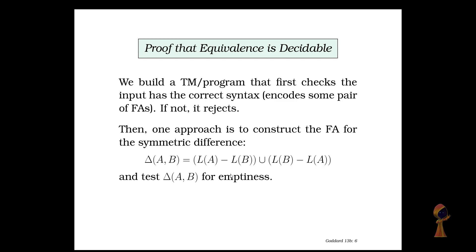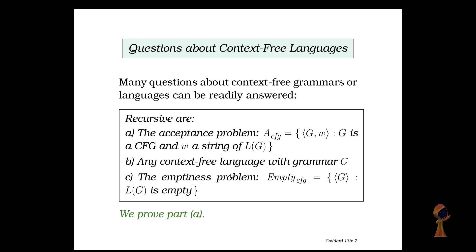Once we test this emptiness, we can use the facts based on the De Morgan laws. Language of A minus language of B is equal to language of A intersect complement of language of B.